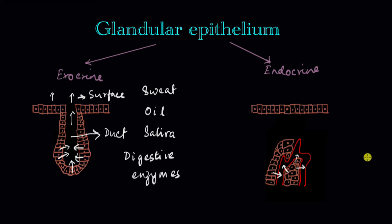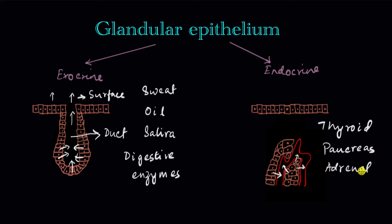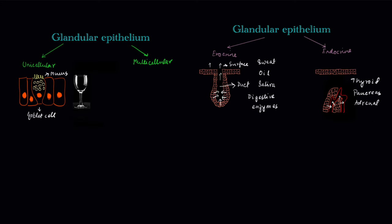Examples of endocrine glands include all the glands that secrete hormones, like the thyroid, pancreas, and adrenal glands. In summary, glandular epithelium can be divided in two ways: into unicellular and multicellular glands, or into exocrine and endocrine glands.